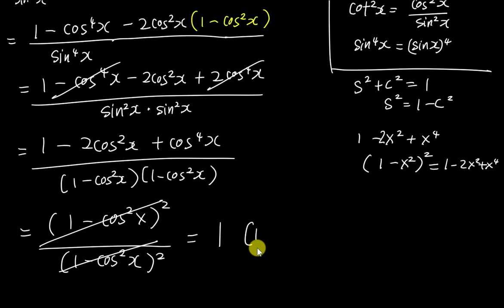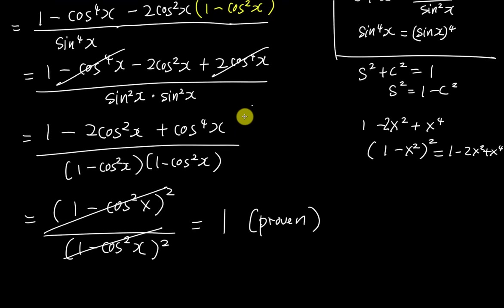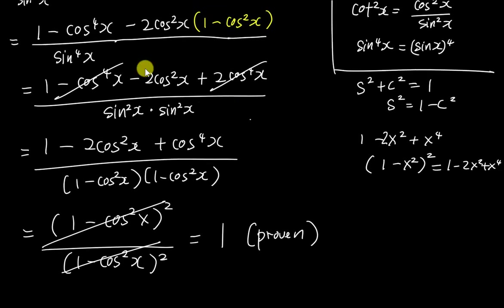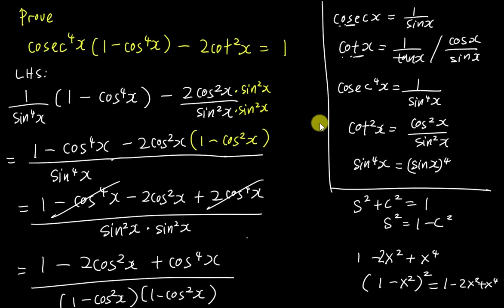Since we get 1, and the question asks us to prove the whole thing equals 1, we can write 'proven.' Just be very careful when you expand — a small mistake will lead to a different answer. But as long as you work carefully, this kind of question is not really hard. I hope this short video helps you understand trigonometry identities better. I'll post more videos to help. See you in the next video, bye bye.